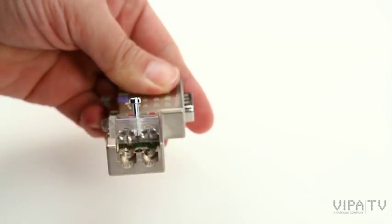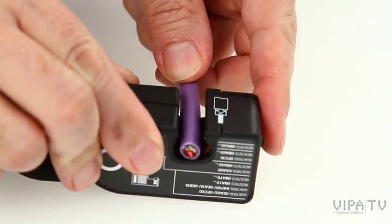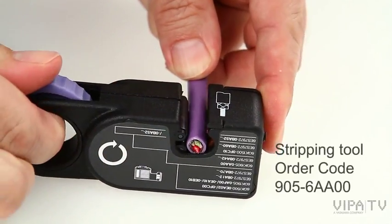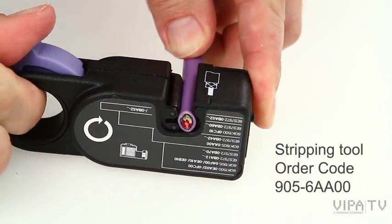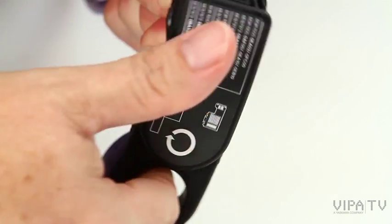Insert a flexible or rigid Profibus cable into the stripping tool and tighten it. Turn the stripping tool several times until notches are produced—a deeper one on the front and a lighter one on the rear of the cable.